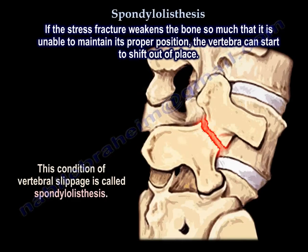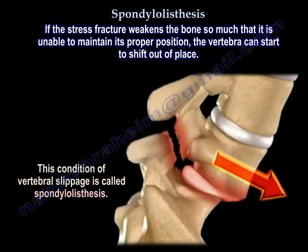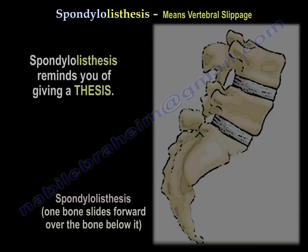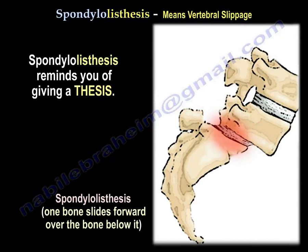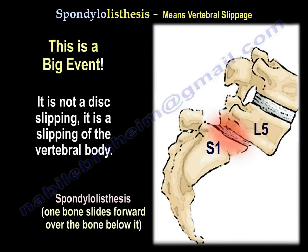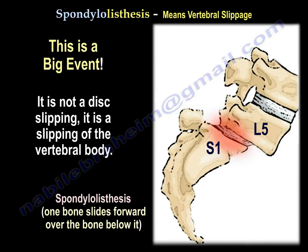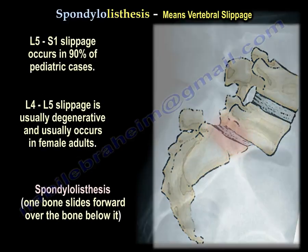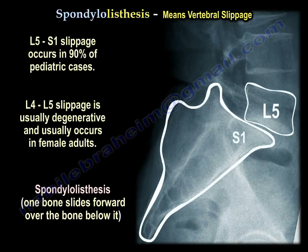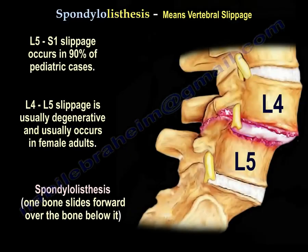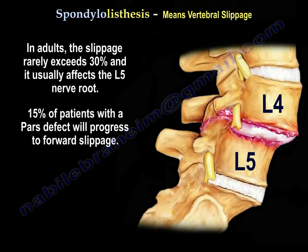The second one: spondylolisthesis. Think of 'thesis' — giving a thesis is a big deal — it means it slipped. It is slippage of the vertebral body, not slippage of the disc. One vertebral body slips forward over the other. It usually occurs at L5-S1 in the pediatric population and L4-L5 in adult females. In adults, the slippage rarely exceeds 30% and it usually affects the L5 nerve root. 15% of patients with a pars defect will progress to forward slippage.